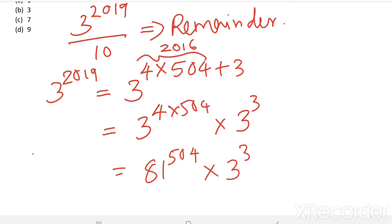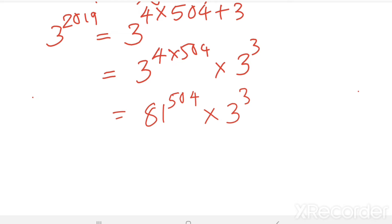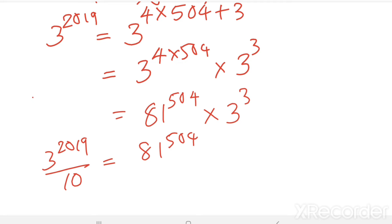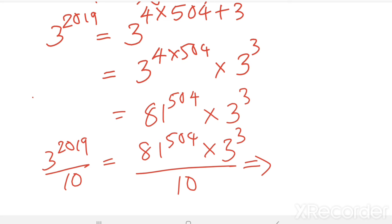So 3 power 2019 divided by 10 equals 81 power 504 into 3 power 3, divided by 10. To find the remainder, first divide the first term: 81 divided by 10.